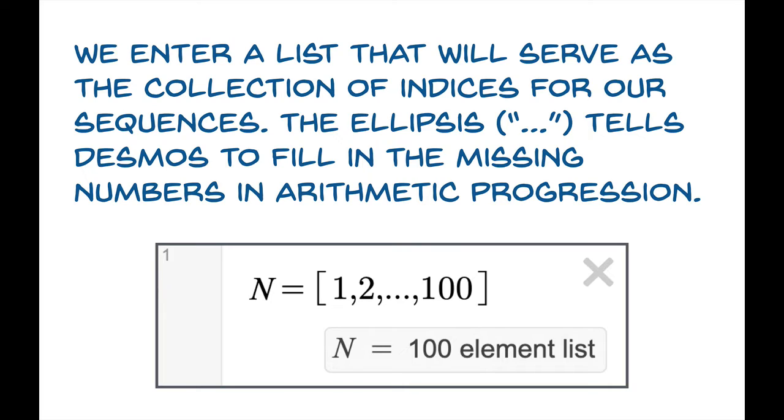If we use the ellipsis and then 100, what this command will do is it will create a list of arguments 1, 2, 3, 4, all the way up to 100 in arithmetic progression. So this is a nice chunk of our domain and this list is going to serve as part of the domain of all of our sequences.